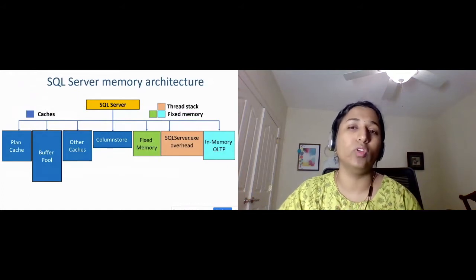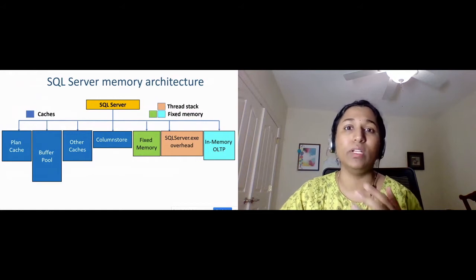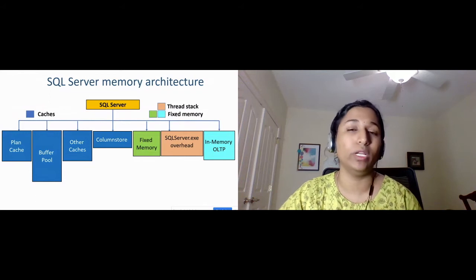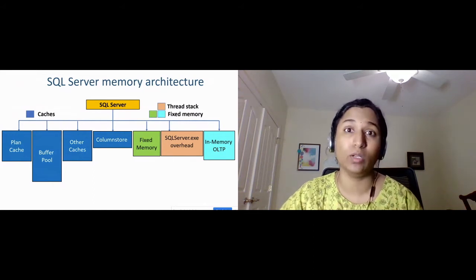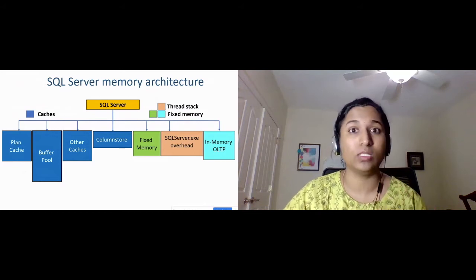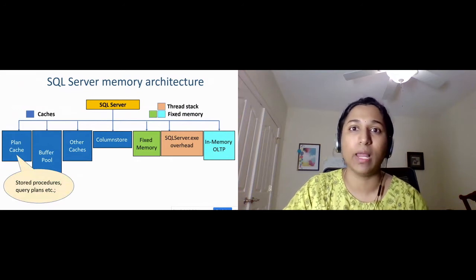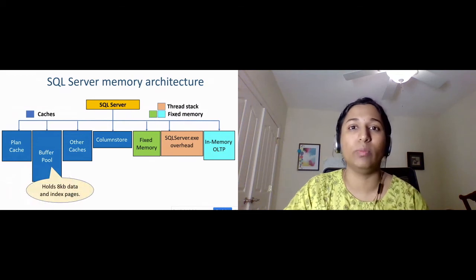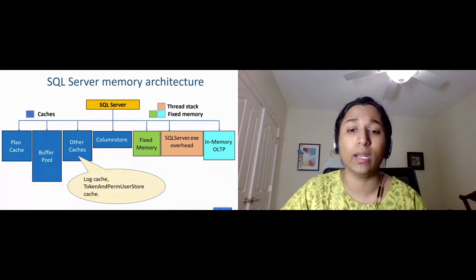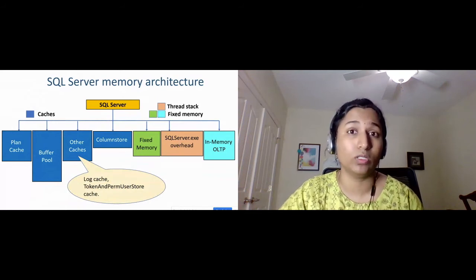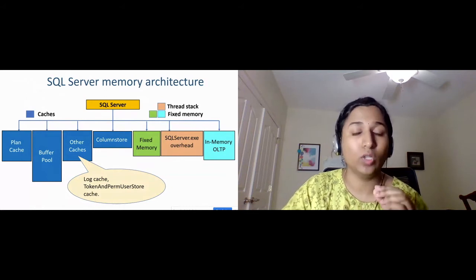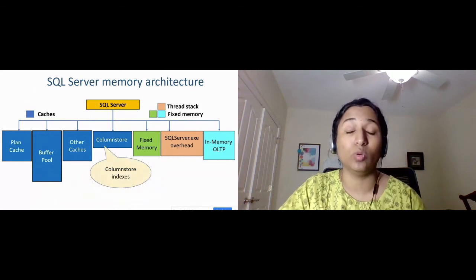Now let's see the overview of the memory architecture of SQL Server. The SQL Server engine is a Windows program that allocates Windows APIs to allocate memory. There are different components inside the memory architecture, but let's focus on the major ones — plan cache and the buffer pool. The plan cache holds stored procedures and query plans. The buffer pool is the biggest component — it holds 8KB data pages and index pages. There are also other types of cache: log cache, token and perm user store cache — which stores user permissions on objects — and column store cache, which stores column store indexes.